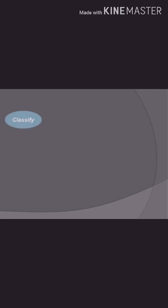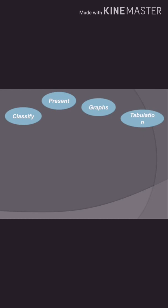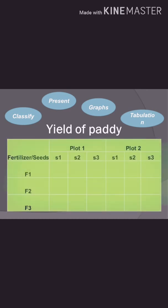Next is the presentation part. Once you collect the data, for better understanding you should classify and present it in a systematic manner — in tabular form or through graphs. For example, considering data collection regarding yield of paddy, I can classify the data by type of seeds (S1, S2, S3), type of fertilizer used (F1, F2, F3), and also by plots.